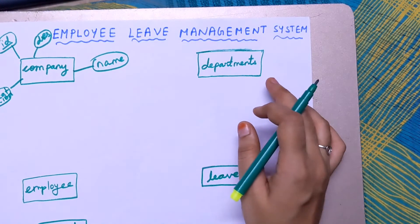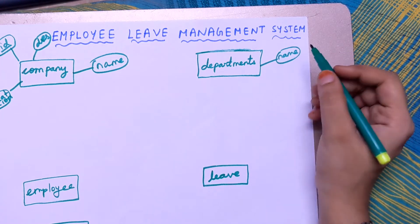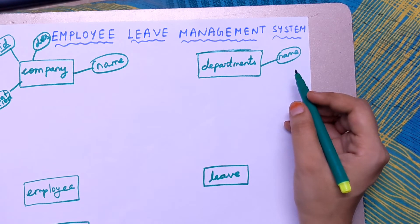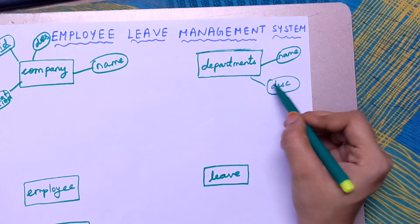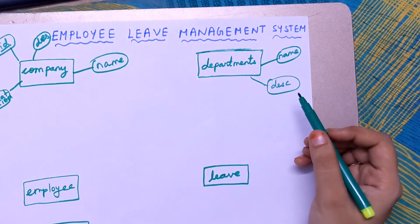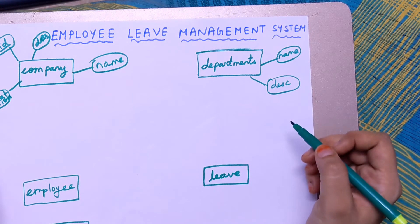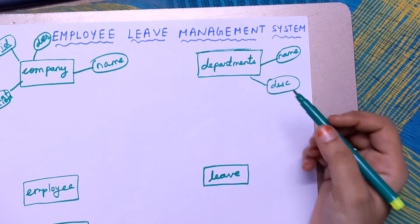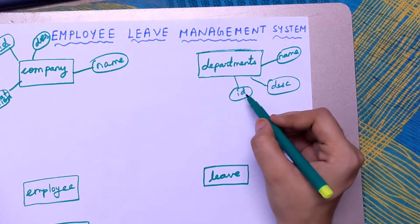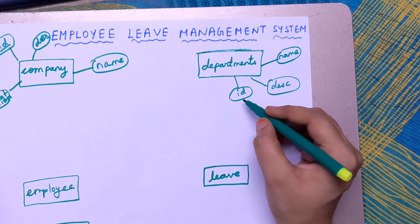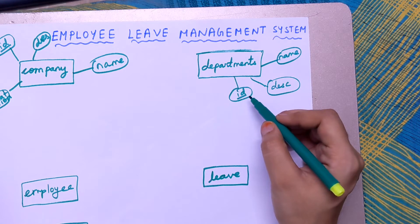The attributes of the department entity are: name of the department, description — where every department is described separately — and department ID. Since all departments will have a unique ID, it must be underlined as a primary key.